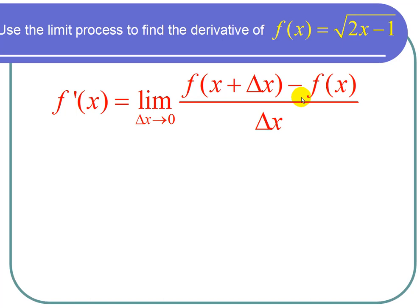So I'm going to substitute for f of x plus delta x where I see an x right here in 2x will become a 2 times x plus delta x.